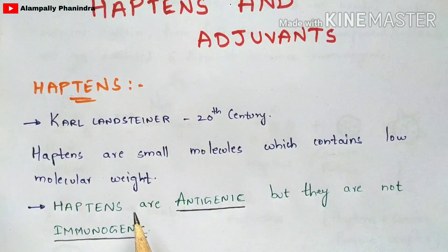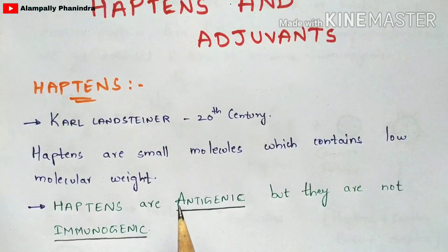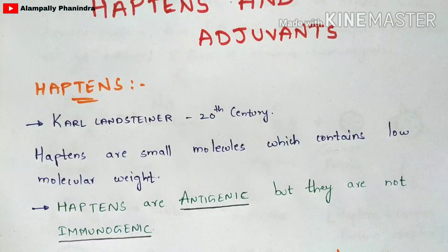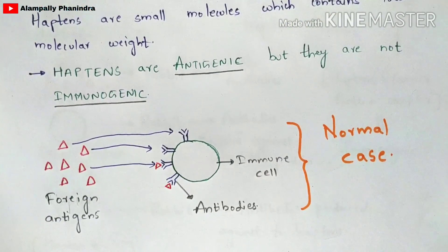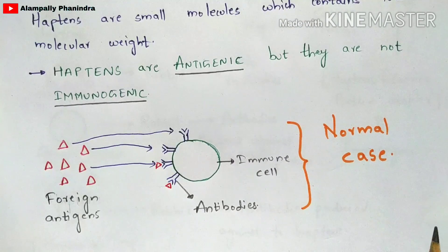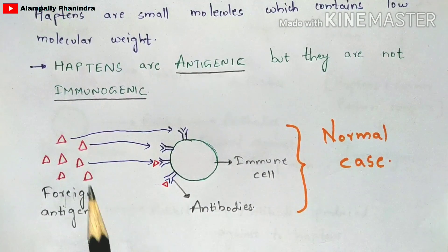One of the most important properties to learn about haptens is that haptens are antigenic but they are not immunogenic. We will look at what antigenic and immunogenic properties mean as we go through the basics of haptens.